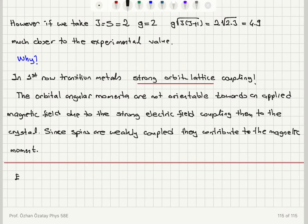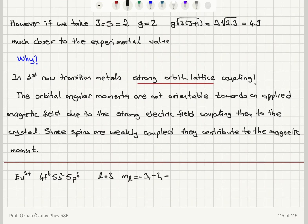Now let's consider another exceptional case: Europium 3+ (Eu³⁺), which has the configuration 4f6 5s2 5p6. Applying Hund's rules, the f orbitals have l = 3, so m_l values are −3, −2, −1, 0, +1, +2, +3. There are therefore seven energy levels split by the Zeeman effect.